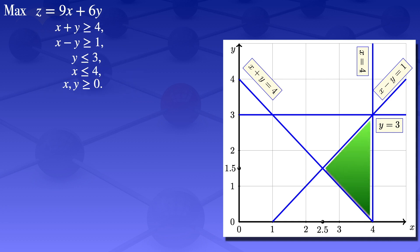That is the feasible region. The next step to find the optimal solution is to identify the corner points. We evaluate the objective function at the corner points of the feasible region. I'll label them point A, point B, and point C.